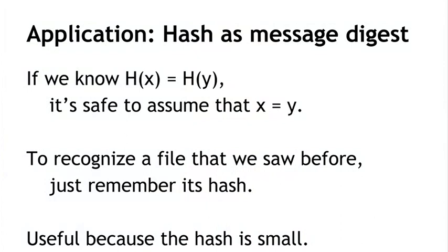Now, what good does collision-freedom do us? If we can assume that we have a hash function that is collision-free, then we can use that hash function as a message digest. What I mean by that is: if we know that X and Y have the same hash, then it's safe to assume that X and Y are the same. Because if someone knew an X and Y that were different yet had the same hash, of course that would be a collision. Since there's no known collision, knowing the hashes are the same, we can assume that the values are the same. Suppose, for example, that we had a really big file and we wanted to be able to recognize later whether another file was the same.